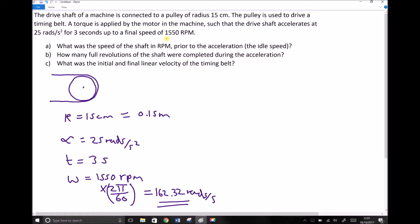So if we refer back to the question, part a says what was the speed of the shaft in rpm prior to the acceleration. So we need the speed of the shaft prior to the acceleration. So it's referring to omega zero, the initial angular velocity, and it wants that in rpm.